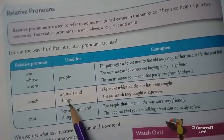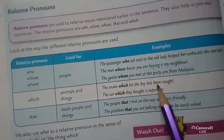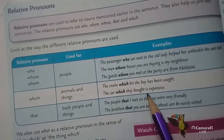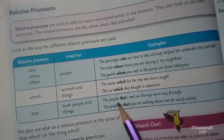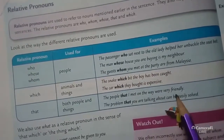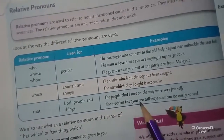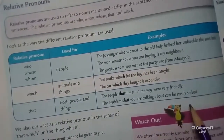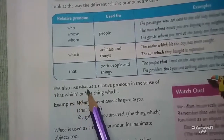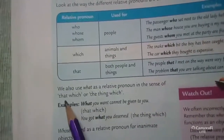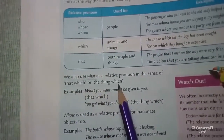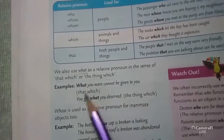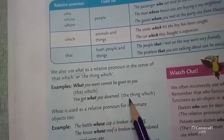Which is used for animals and things. Example: 'The snake which bit the boy has been caught.' 'The car which they bought is expensive.' That is used for both people and things: 'The people that I met on the way were very friendly.' 'The problem that you are talking about can be easily solved.' We also use 'what' as a relative pronoun in the sense of 'that which' or 'the thing which' — like 'What you want cannot be given to you' and 'You got what you deserve.'